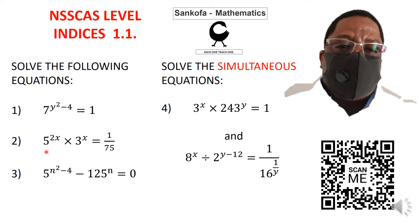The second one is 5^(2x) × 3^x = 1/75. The third one here is 5^(n²-4) - 125^n = 0.